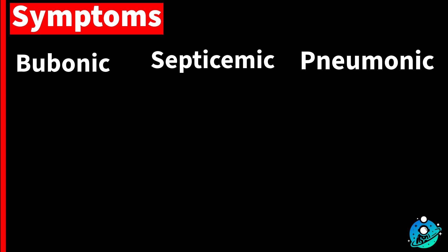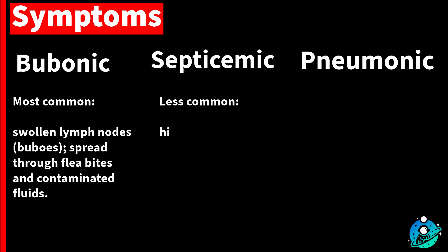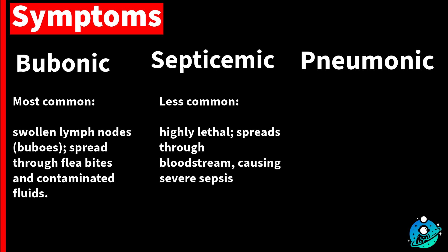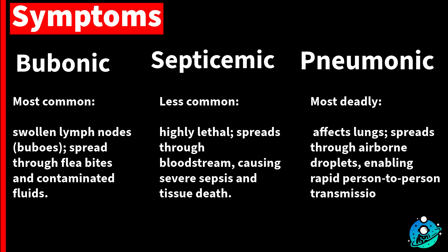Bubonic, the most common form, was characterised by swollen lymph nodes called buboes, and spread through flea bites and contact with contaminated fluids. Septicemic was a less common but highly lethal form that spread through the bloodstream, leading to severe sepsis and tissue death. Pneumonic, the most deadly form, affected the lungs and spread through airborne droplets, allowing for rapid person-to-person transmission.